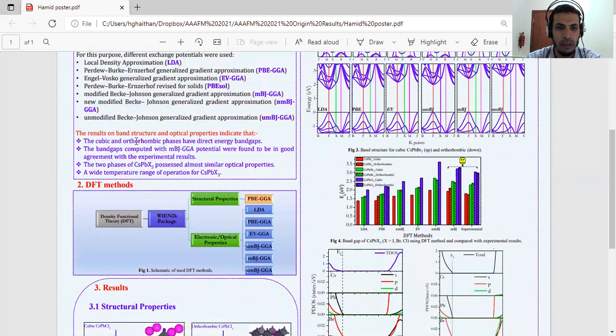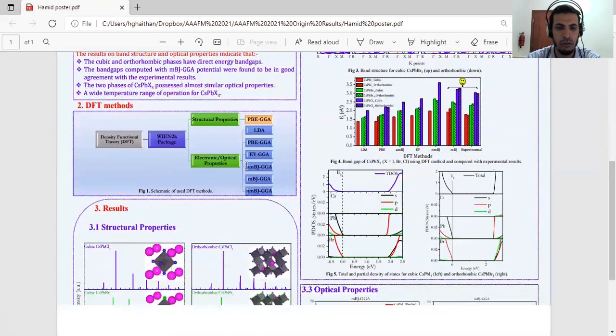We found after we calculated the structural and optical properties that the cubic and orthorhombic have their energy bandgap. And also most importantly, the bandgap computed with modified MBJ, we found in good agreement with experimental result, as we can see later. And also optical properties of this halide almost give similar optical properties and a wide temperature range of operation for cesium lead chloride.